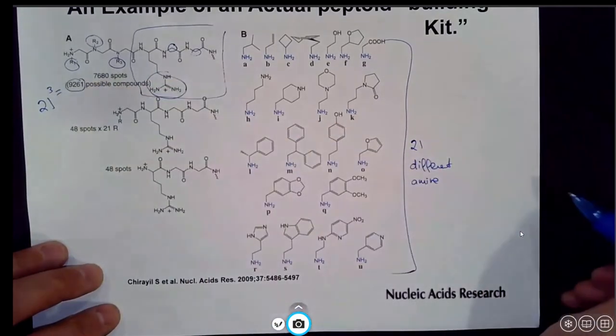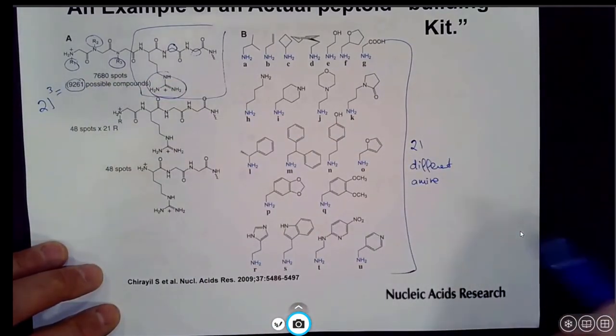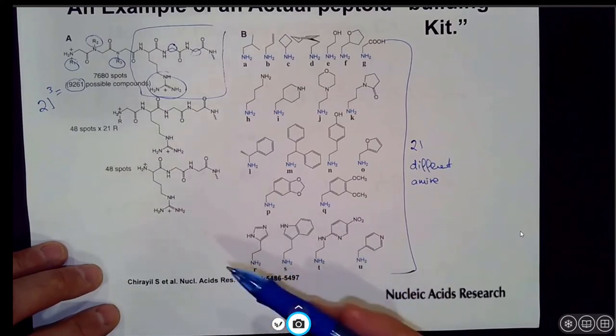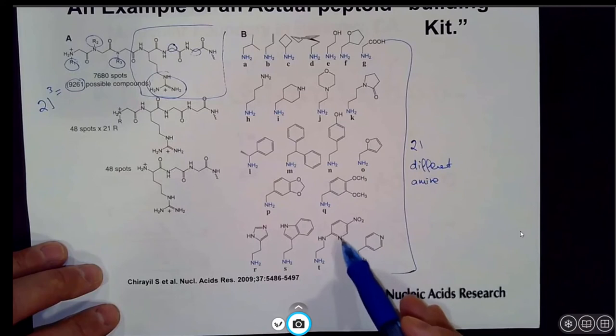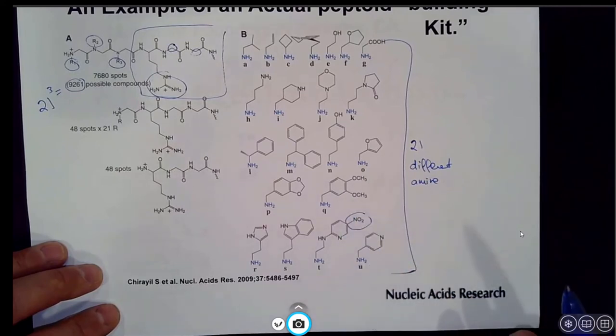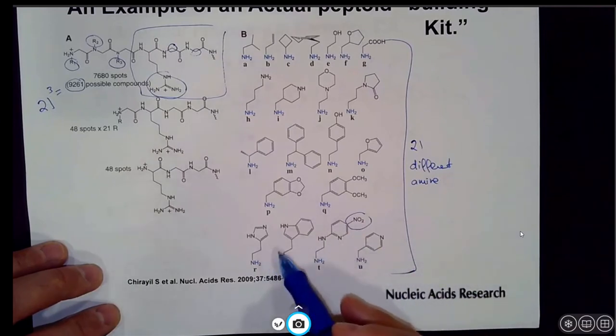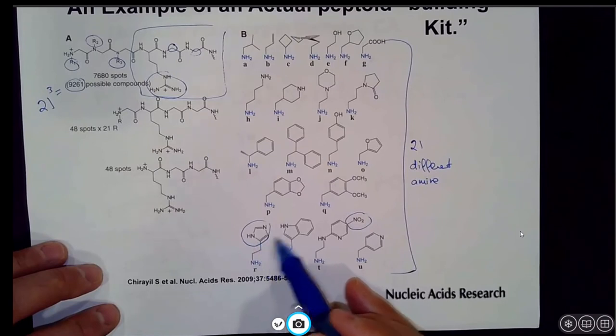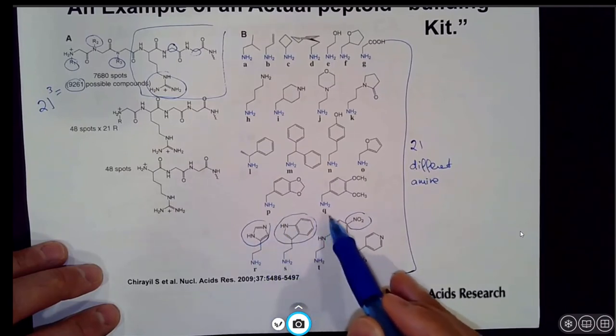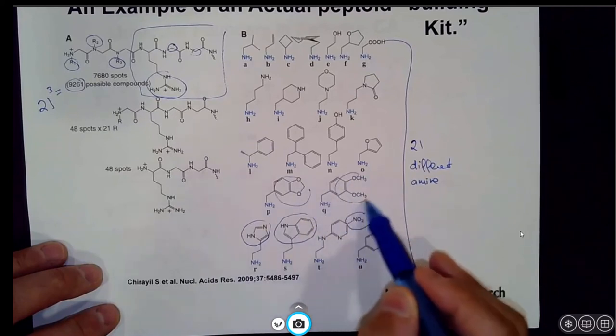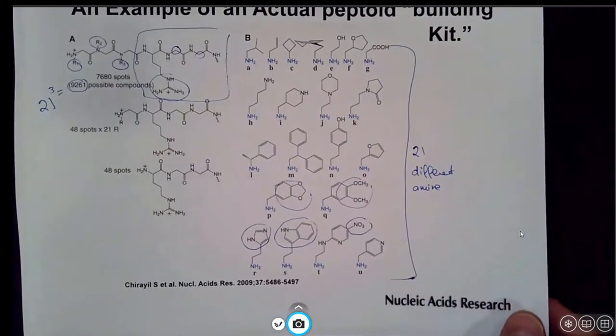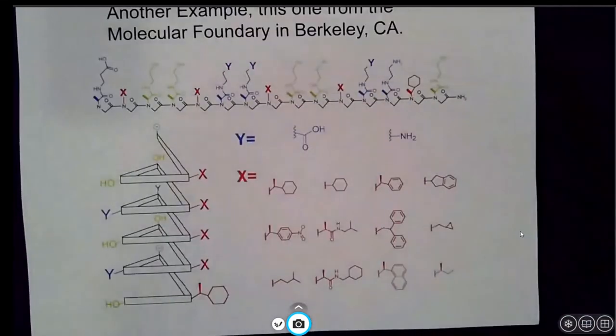They randomized positions 1, 2, and 3 in different combinations, so that's 21 to the power of 3, and that equals 9,261 different compounds. What's also remarkable about this peptoid building kit is that you can use unnatural functional groups like nitro groups that are not present within our peptides or proteins. You can have amino acids that look very similar, like this histidine, this looks like tryptophan, but you can see here that you have some unnatural structures too. It gives you access to a wide variety of different structures. That's an example of an actual peptoid building kit.